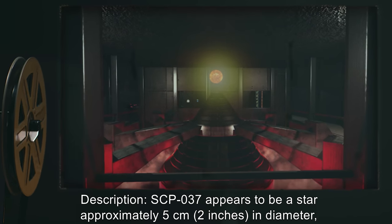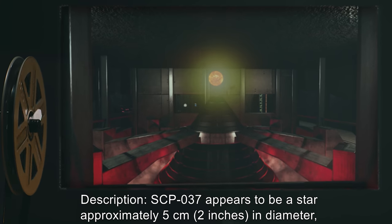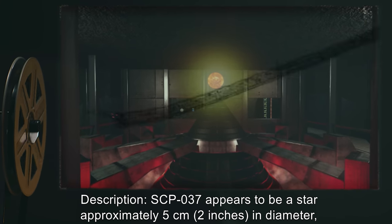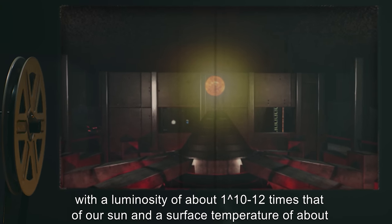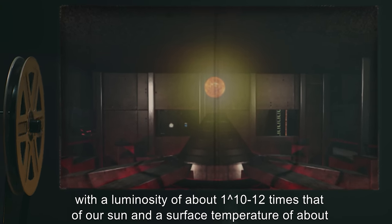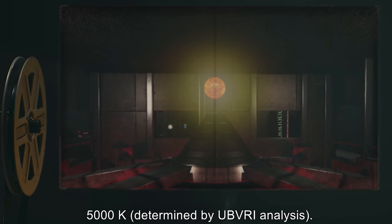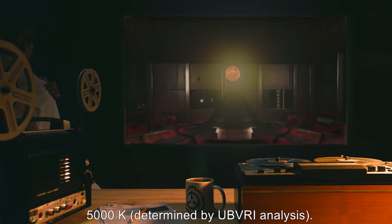SCP-037 appears to be a star approximately 5 centimeters (or 2 inches) in diameter, with a luminosity of about 1 to the power of 10 to 12 times that of our sun and a surface temperature of about 5,000 Kelvin, determined by UBVRI analysis.